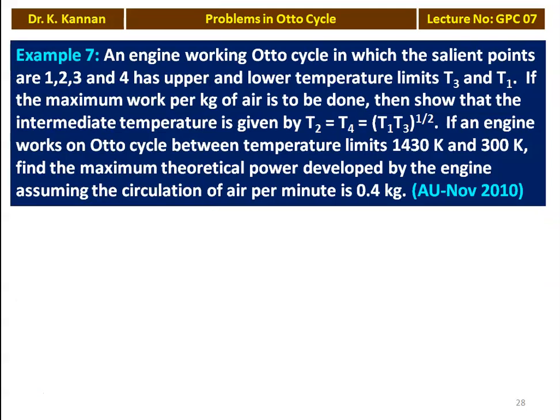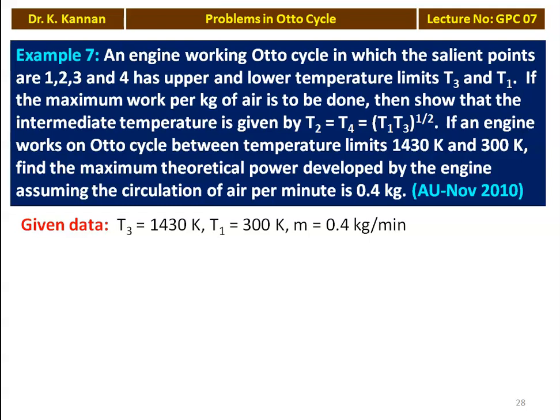Example number 7 from the November 2010 question paper. An engine working on Otto Cycle in which the salient points are 1, 2, 3 and 4, has upper and lower temperature limits of T3 and T1. T3 is the upper temperature limit and T1 is the lower temperature limit. If the maximum work per kg of air is to be done, show that the intermediate temperature is given by T2 = T4 = √(T1·T3). The temperature limits are 1430 Kelvin and 300 Kelvin, and the mass is 0.4 kg per minute.